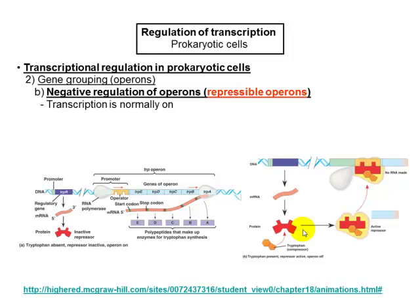If there is plenty of tryptophan in the cell, the cell doesn't need to waste energy making more. Making protein uses energy — every phosphodiester bond in mRNA synthesis costs energy, and every peptide bond during translation costs more energy. So if you have plenty of tryptophan, why waste energy making more? The bacteria has a neat system for controlling when to turn this operon on or off.